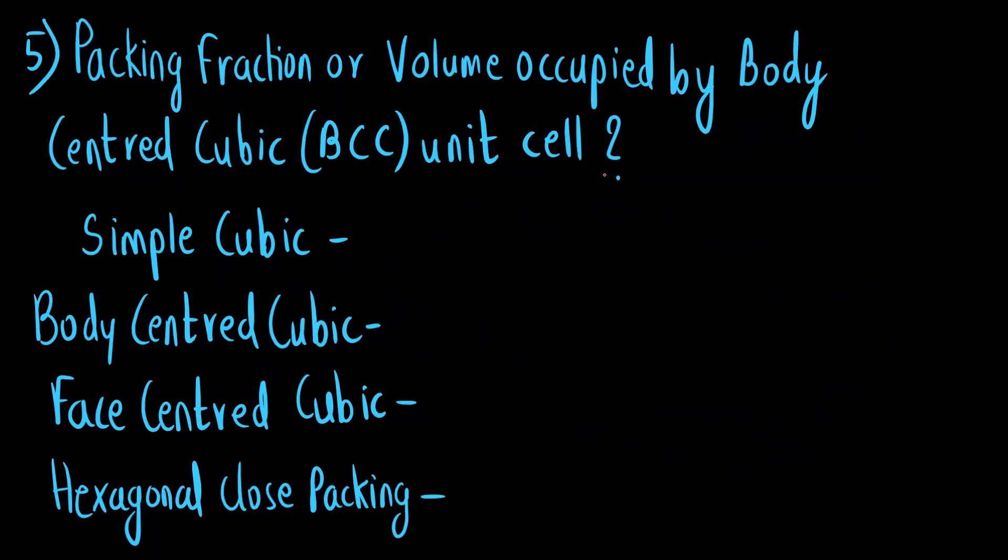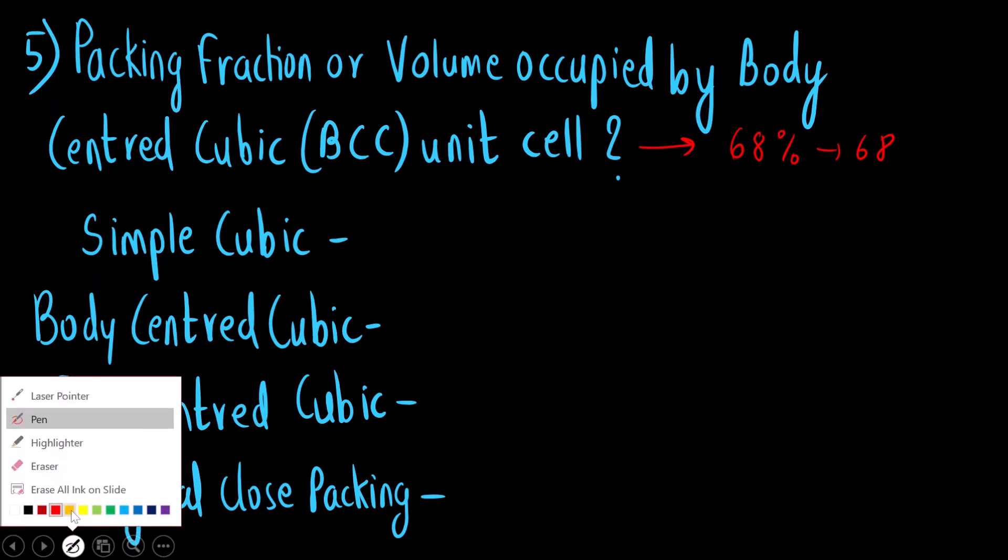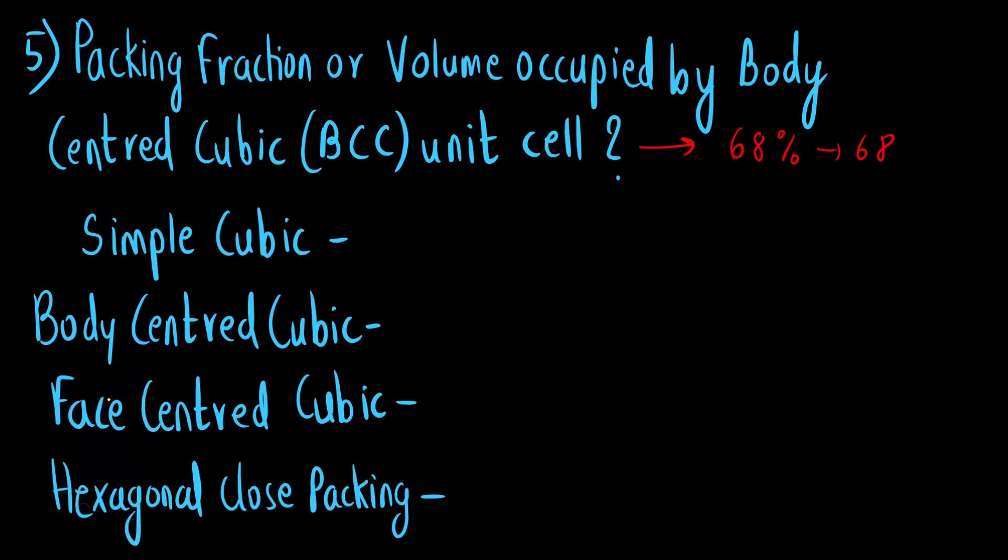Now let us see the next question. This was a very simple question, packing fraction of volume occupied by body centered cubic unit cell is how much. So the correct option was 68 percent or 68. Let us write down the packing fractions for all the unit cells. Simple cubic it is 52 percent, body centered cubic it is 68 percent which was asked, face centered cubic is 74 percent and hexagonal close packing is again 74 percent that is same as that of the face centered cubic. So here the correct answer was 68.